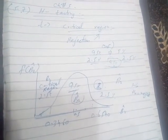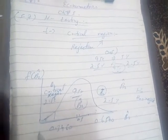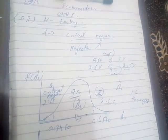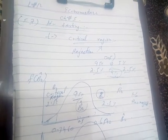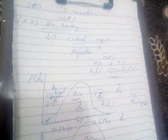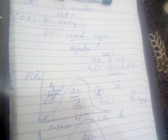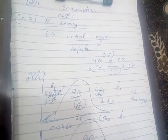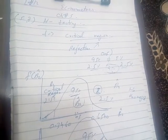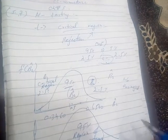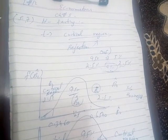सिर्फ यही सीखना है — book का असल मकसद यही है इस पूरे topic का। यह तो interval based था। हमारे पास जो second approach है — जो value calculate करें उसके base पे — acceptance area क्या है, rejection area क्या है। ये 95% acceptance region है। और ये rejection area यानी critical area है — जो हम नहीं चाहते कि इस area में आ जाए — both sides पे critical region है।